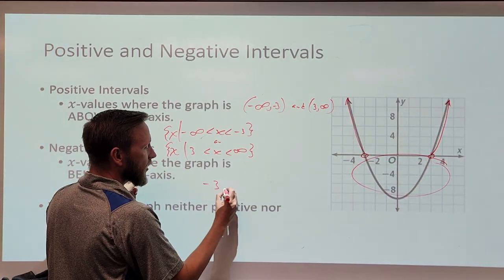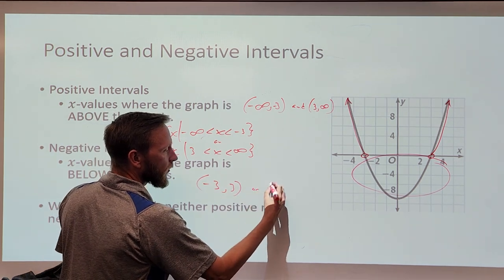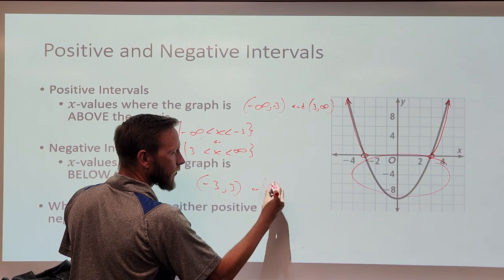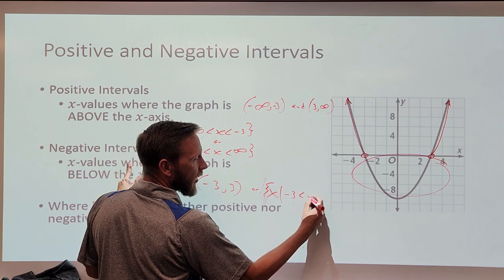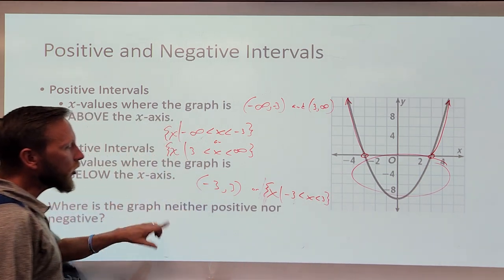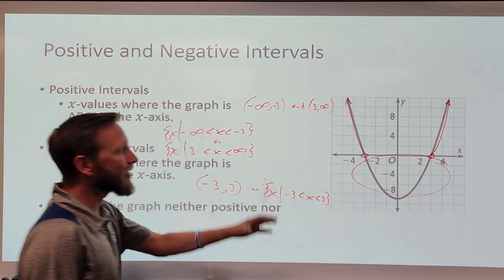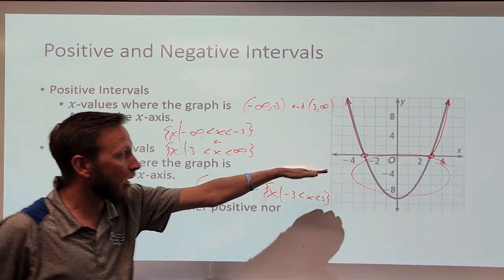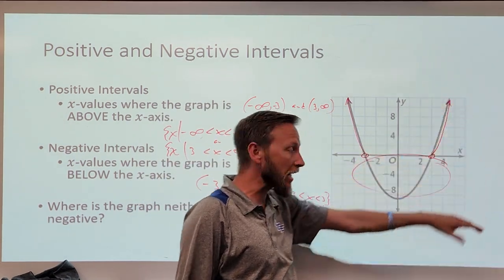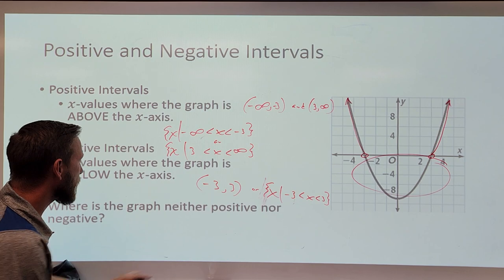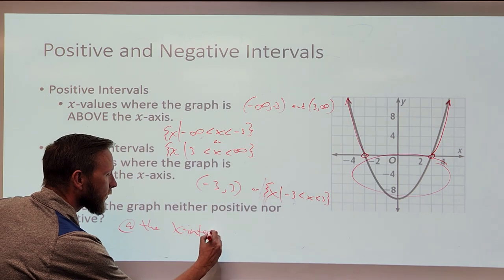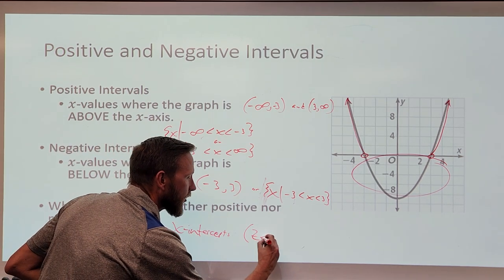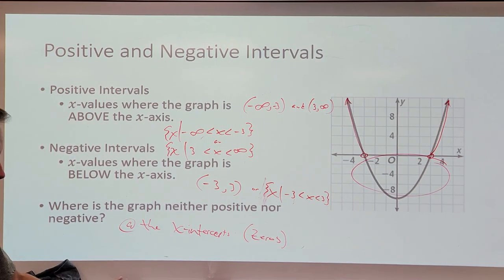It's below the x-axis from negative 3 to positive 3. If you're using set builder notation, you're going to say negative 3 is less than x is less than positive 3. What you'll notice is that at those values — at negative 3 and at positive 3 — the graph is neither above nor below the x-axis; it's right on. So where is the graph neither positive nor negative? At the x-intercepts, sometimes referred to as the zeros of the function — where the output is zero.